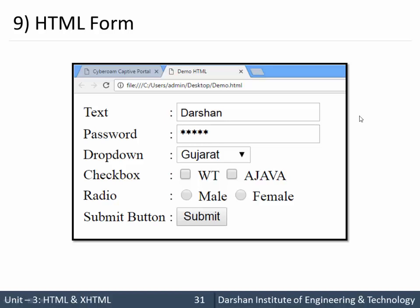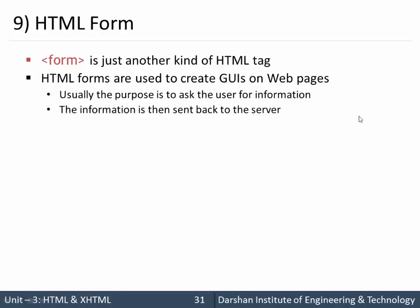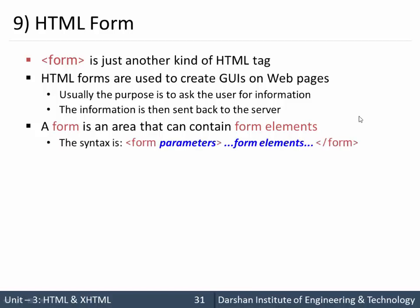In this session we are going to discuss HTML forms. A form is just another kind of HTML tag, but it is generally used to create GUIs in web pages. Usually the purpose of the form is to ask the user for information, which is then sent back to the server for further processing. A form is an area that can contain form elements. The basic syntax of the form tag is the form tag with attributes to set the parameters.